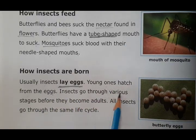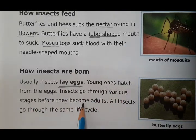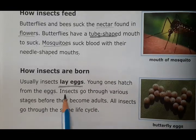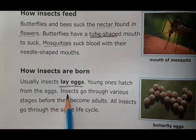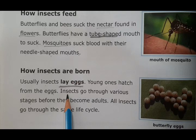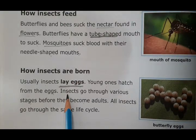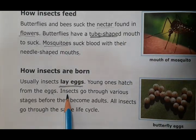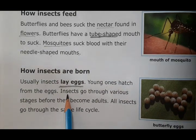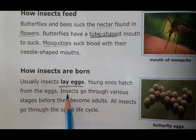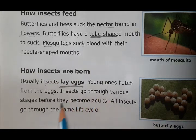Insects go through various stages before they become adults. In a similar manner to humans, insects also go through different stages as they grow. All insects go through the same life cycle — they all pass through similar stages of growth.